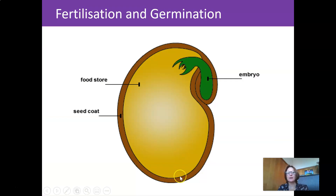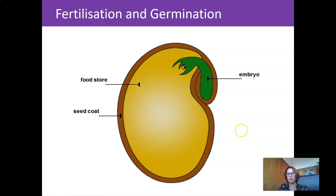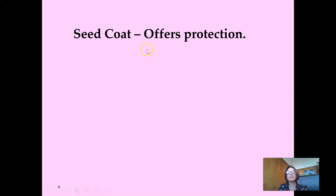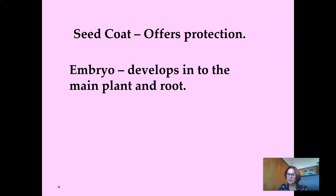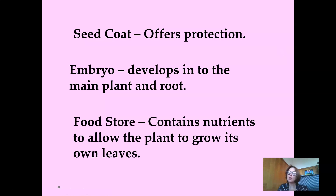Let's take a closer look at the seed. We have the embryo, the food store, and the seed coat — you should be remembering this from Grade 4 and 5. The seed coat offers protection. The embryo develops into the main plant and root. The food store contains all the nutrients to allow the plant to grow its own leaves. When the seed is in its developing stage, it needs nutrients from the food store because it's not yet able to absorb water and mineral salts from the soil.